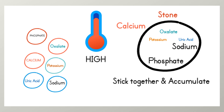As mentioned earlier, when these particles accumulate in high quantities in your body, they stick to each other and form what are called stones. For example, when we have a high level of oxalate and a high level of calcium, they stick to each other and form what is called a calcium oxalate stone.